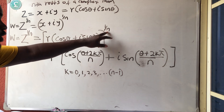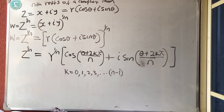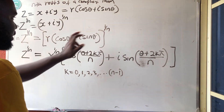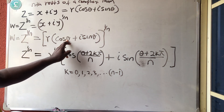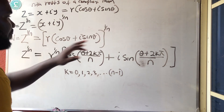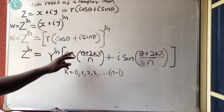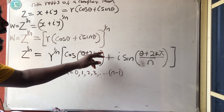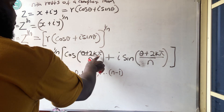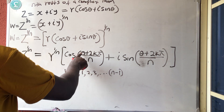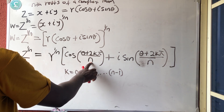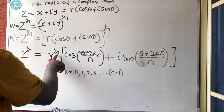R raised to power n — if you want R raised to power n to be just R raised to power n, then in this theta you now multiply by n. But since it is 1 over n, we have it as theta plus 2k pi. This formula is very important: theta plus 2k pi over n. You know what your n is — n is from here.